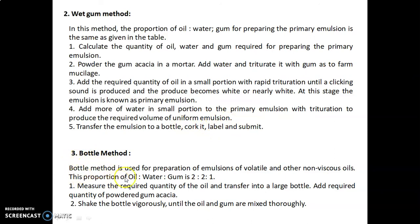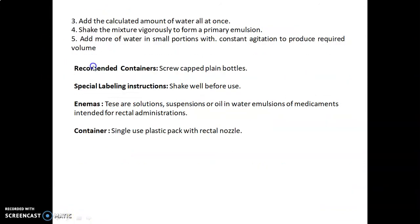The bottle method is used for the preparation of emulsions of volatile and other non-viscous oils, with a proportion of oil to water to gum of 2:2:1. Measure the required quantity of oil, transfer into a large bottle, and add required quantity of powdered gum acacia. Shake vigorously until oil and gum are mixed thoroughly, then add the calculated amount of water all at once and shake vigorously to form a primary emulsion. Add more water in small portions with constant agitation to produce the required volume. Recommended containers are screw-capped plain bottles. Special labeling: 'Shake well before use.' Enemas are solutions, suspensions, or O/W emulsions of medicaments intended for rectal administration; container is a single-use plastic pack with rectal nozzle.